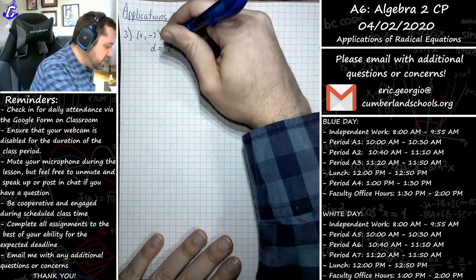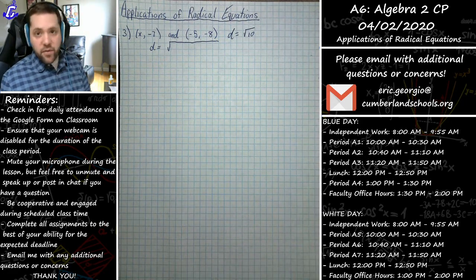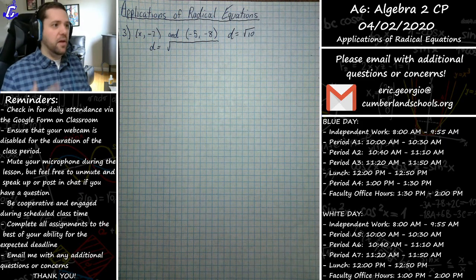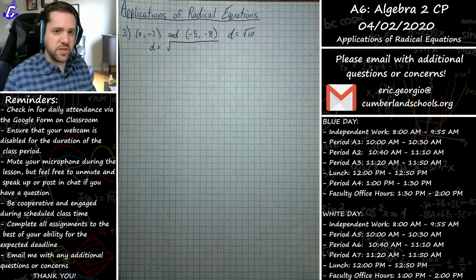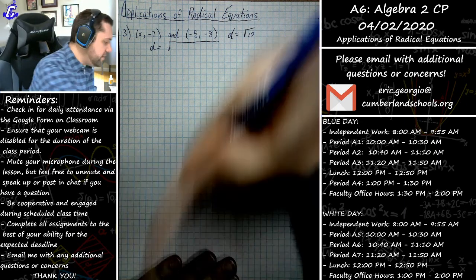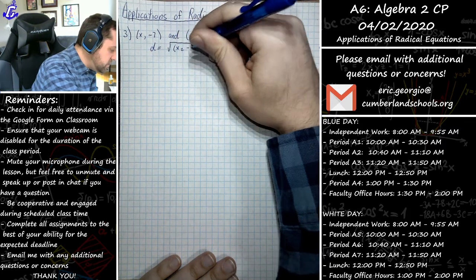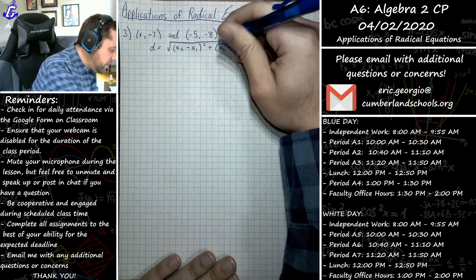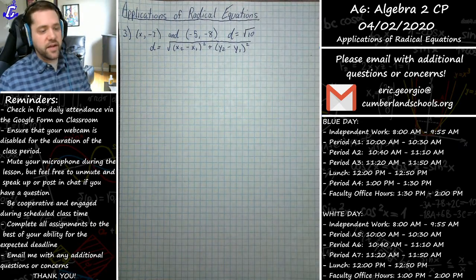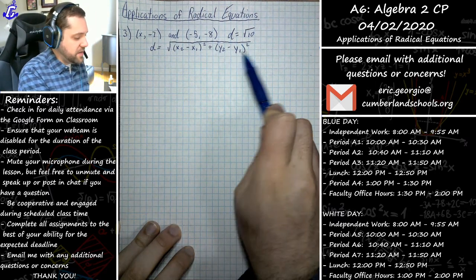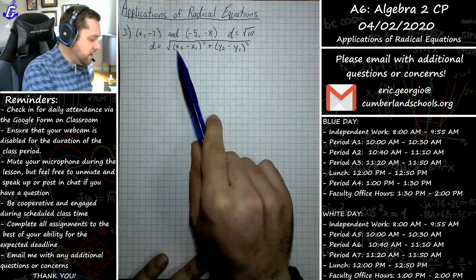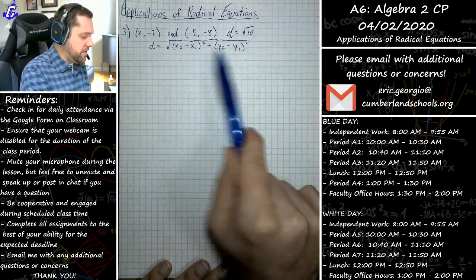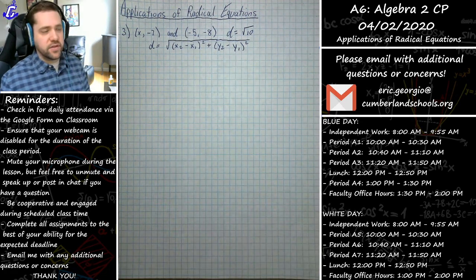Recall from geometry we have to use the distance formula. You are not going to be required to memorize the distance formula — if you ever need it, it will be provided. The distance formula is the square root of (x₂ minus x₁) squared plus (y₂ minus y₁) squared. The order you write the terms doesn't matter because addition is commutative, as long as you don't mix up your x's and y's.